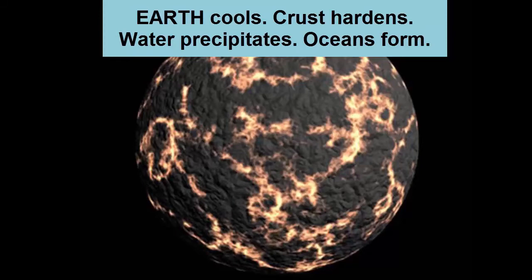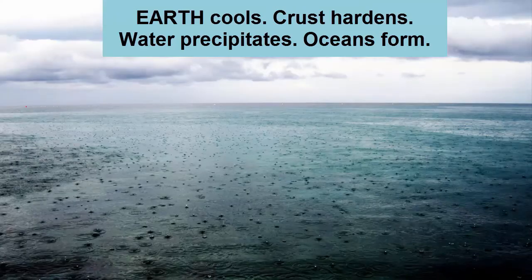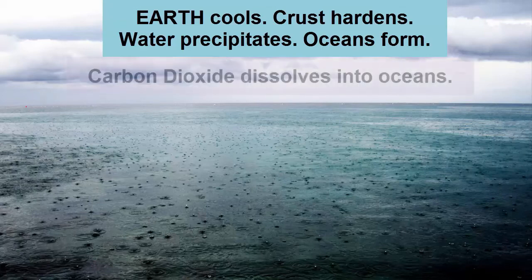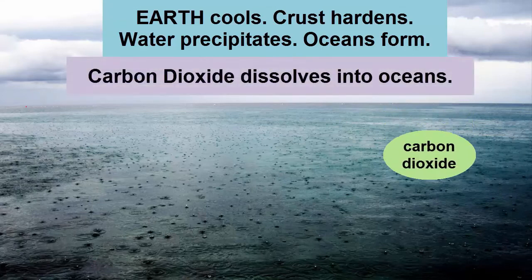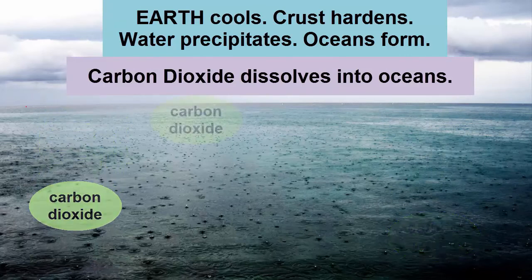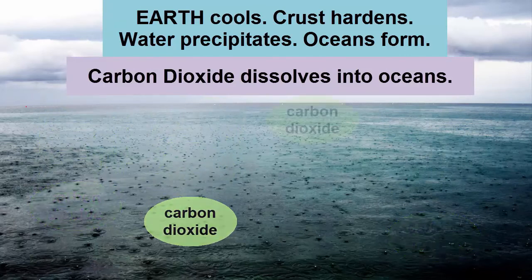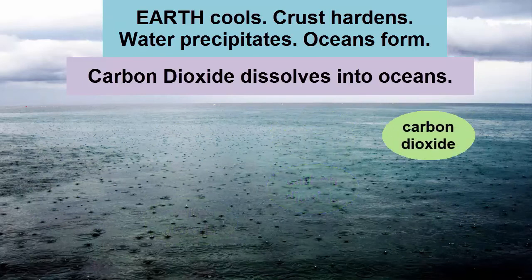First, as the early Earth lost some of its initial heat of formation and cooled, not only did the surface crust harden, but it also allowed the water present in the early atmosphere to cool enough for it to rain down and cover the hard crust with oceans. These early rains would have removed most of the water from the atmosphere, leaving it, like today, as only one to four percent by mass depending on the climate. Water is a giant absorber for carbon dioxide — carbon dioxide is highly soluble in water — so once the oceans formed, much of the carbon dioxide in the atmosphere would have dissolved into it.